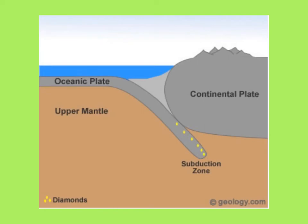Diamond formation in subduction zones: tiny diamonds have been found in rocks that are thought to have been subducted — pulled beneath — deep into the mantle by plate tectonic processes and then returned to the surface. Diamond formation in a subducting plate might occur at as little as 50 miles below the surface, so it's not as deep as the mantle formation we just learned about.